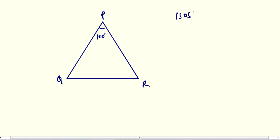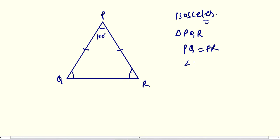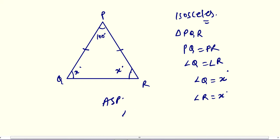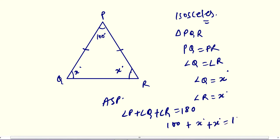This is an isosceles triangle, so in triangle PQR two sides are equal: PQ equals PR. If sides are equal, the angles opposite to them are also equal. The angle opposite PQ is R, and the angle opposite PR is Q. So angle Q equals angle R. Let angle Q equal X degrees, then angle R is also X degrees. Now apply the angle sum property: angle P plus angle Q plus angle R equals 180 degrees. Angle P is 100, angle Q is X, and angle R is X.